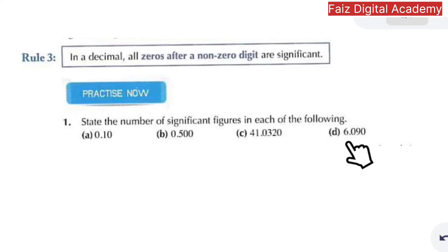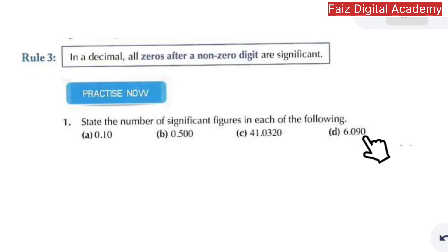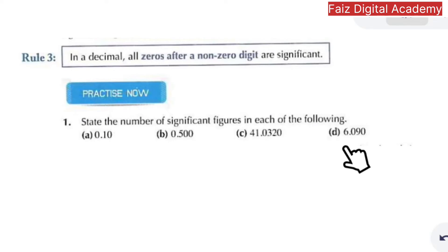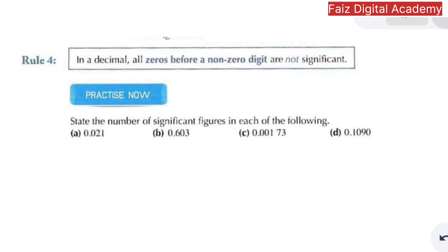In part d, 6.090 has four significant figures. The first zero is between non-zero digits (rule 2), and the last zero is after the decimal following a non-zero digit (rule 3), so all four digits are significant numbers.